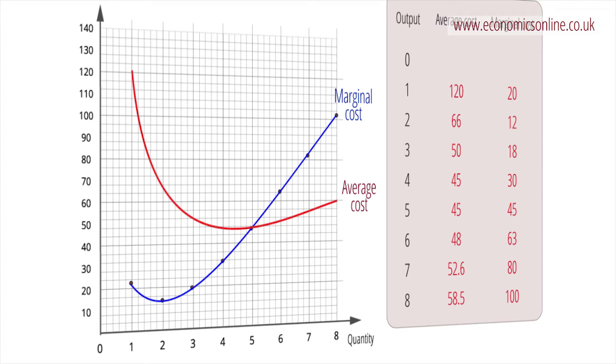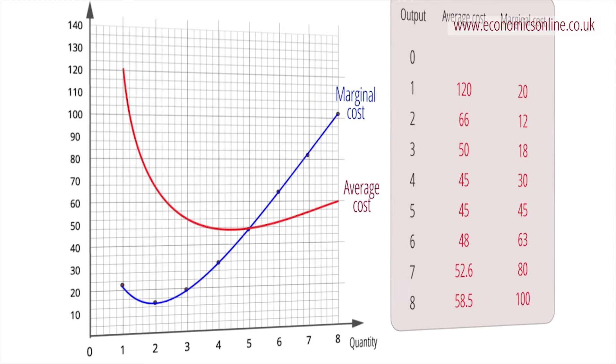When marginal cost is below average cost, average cost will be falling, and when it is above average cost, average cost will be rising. The marginal cost curve is significant because a firm's decision to supply is taken at the margin. Hence the marginal cost curve is the firm's supply curve.